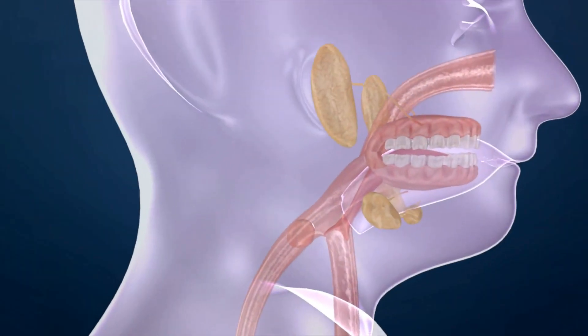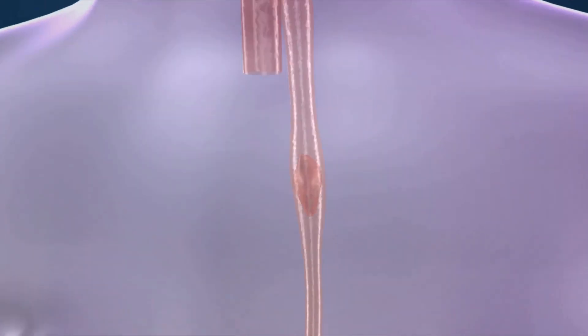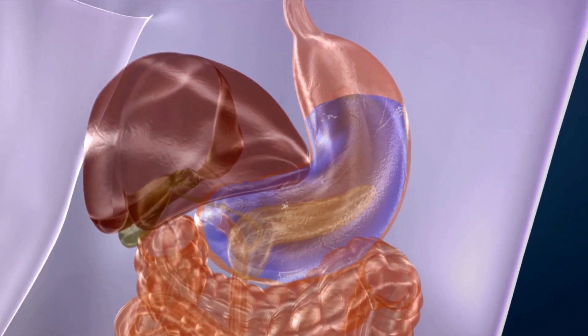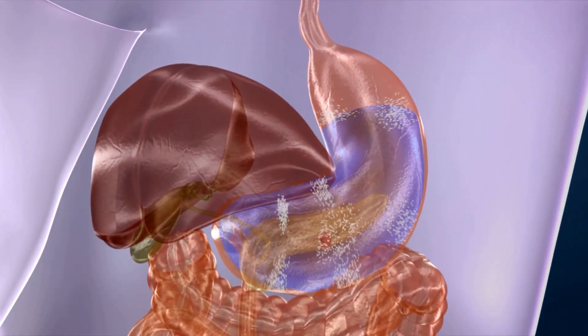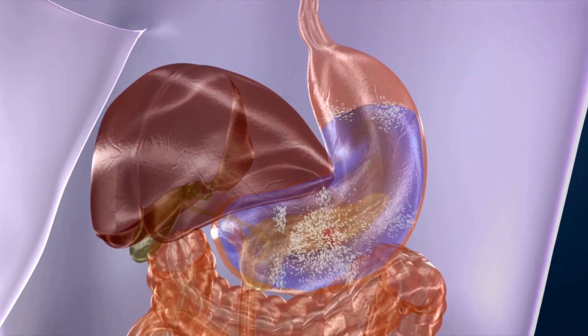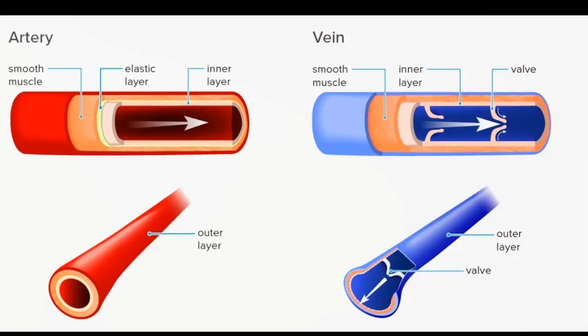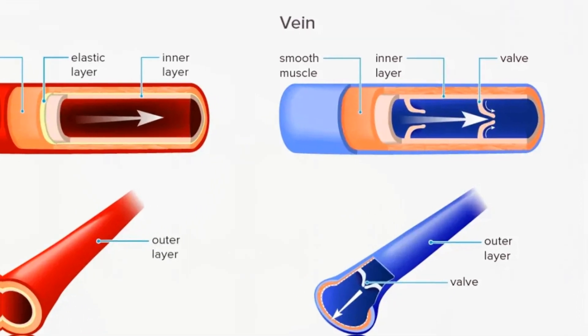Smooth muscles, on the other hand, are found in organs and structures like the esophagus, stomach, intestines, bronchi, uterus, urethra, and blood vessels. They control involuntary movements within these organs.